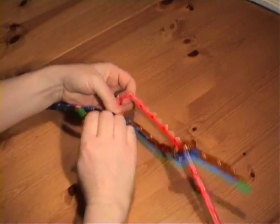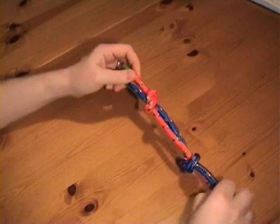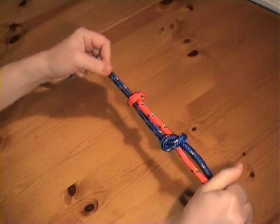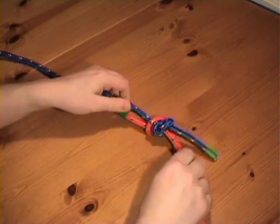And then we'll tie the second one, like that. And then you pull on the standing parts, the knots slide together, and we have the fisherman's knot.